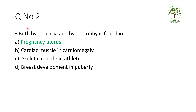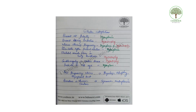A classic example for both hyperplasia and hypertrophy is the pregnant uterus. Cardiac muscle in cardiomegaly is pathological hypertrophy. Skeletal muscle in athletes is physiological hypertrophy. Breast development at puberty is hyperplasia, while during lactation it is hypertrophy. Uterus during pregnancy is the classic example for hyperplasia plus hypertrophy.